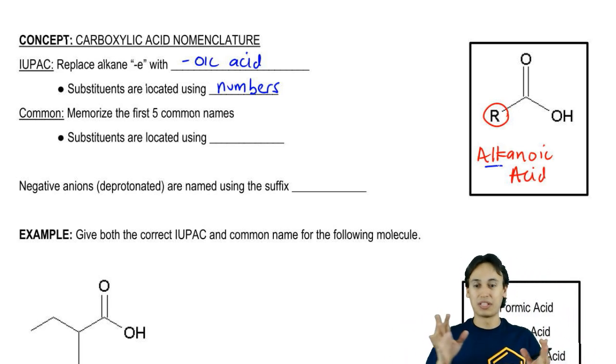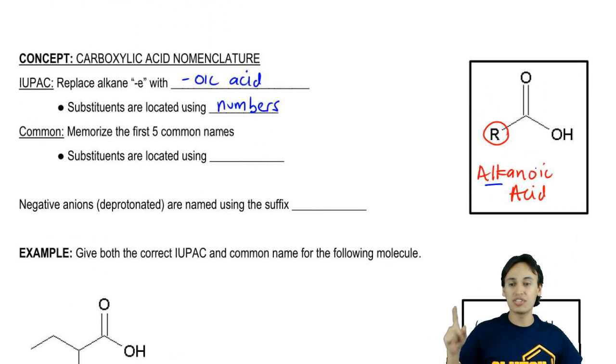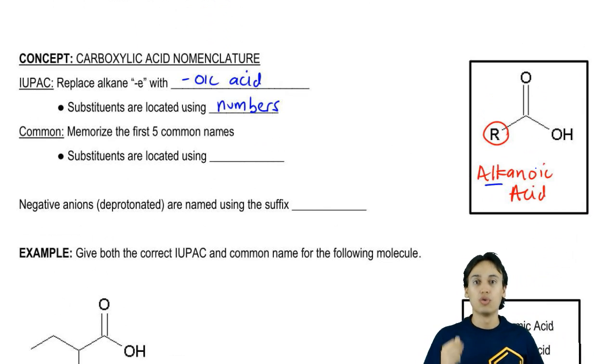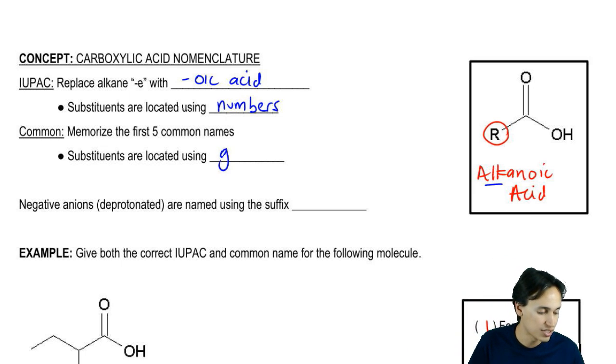Also, I told you you have to memorize these common names, but it turns out that there's another difference. When you're using common names, you don't locate substituents with numbers. I know. It doesn't make sense, but instead you're going to use the Greeks. You're going to use the Greek symbols.